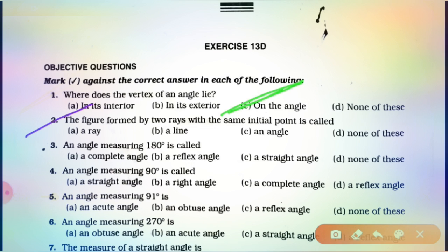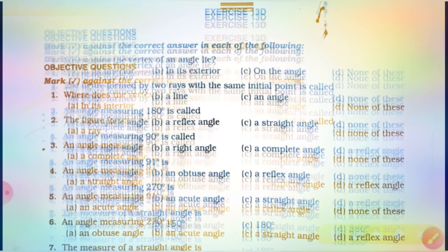The next question is: the angle formed by two rays with the same initial point is called — it's the definition of an angle. So, students, clear? Now, proceed to the next question.